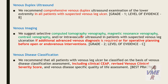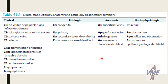Venous disease classifications: we recommend choosing one of the different classification systems. We have the CEAP classification — C for clinical, E for etiology, A for anatomy, and P for pathophysiology. C0: no visible or palpable sign of venous disease. C1: telangiectasia or reticular veins. C2: varicose veins. C3: edema. C4A: pigmentation or eczema. C4B: lipodermatosclerosis or atrophy blanche. C5: healed venous ulcer. C6: active venous ulcer.